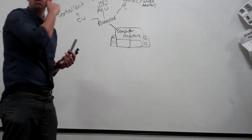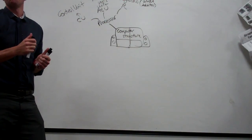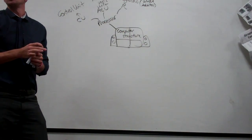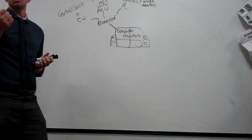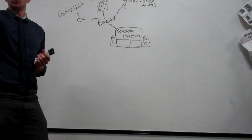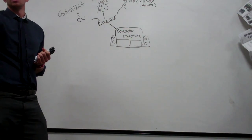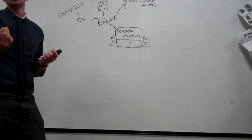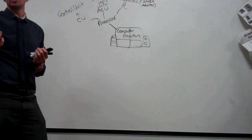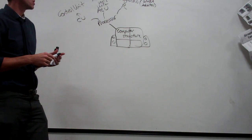We know three things that can be stored in a register. What are they? Instructions. What else? Address locations. And? Data — which could be an instruction to decode and execute, or it could be the result of a calculation.